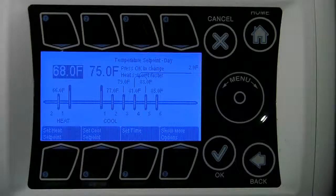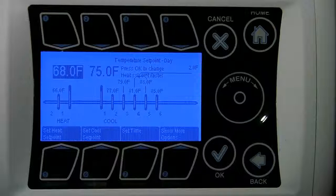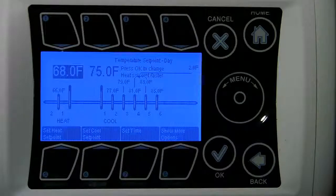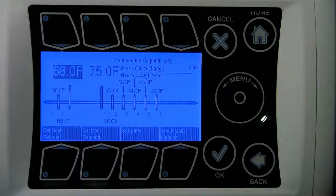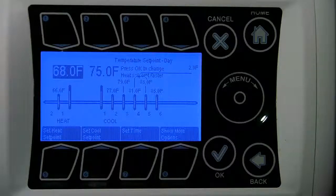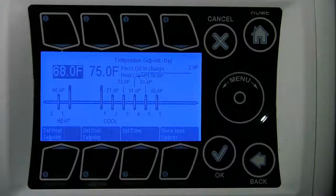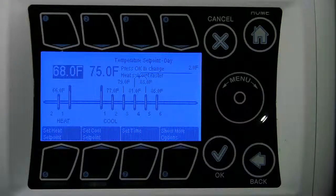You can program up to 6 cooling and 2 heating stages. Cool 1 and Heat 1 are the least aggressive, with Cool 6 and Heat 2 the most aggressive. In your program you will determine what equipment you want to be activated in each of the stages.